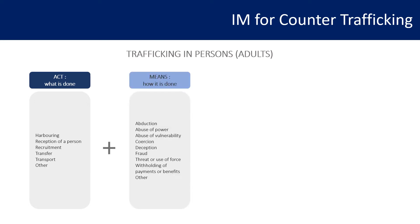The second component is Means — how it is done. Examples of means include abduction, abuse of power, abuse of vulnerability, coercion, deception, fraud, threat or use of force, withholding of payments, and in general any modality the trafficker can use to exert control over the victim.